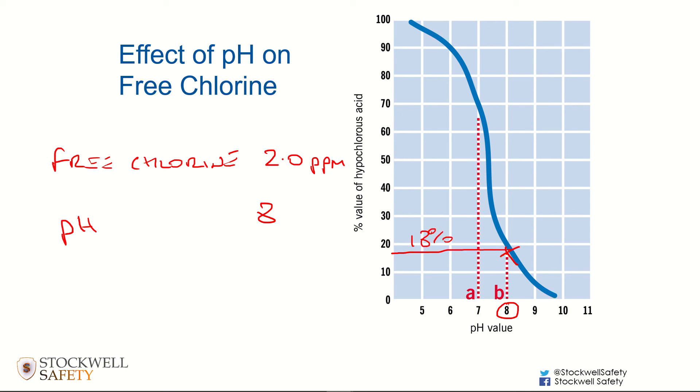So have you really got 2 parts per million chlorine? Well, yes, but only 18% of that 2 parts per million is actually doing anything useful, which is effectively only 0.36 parts per million. That's the real situation in terms of how much of that chlorine is useful.